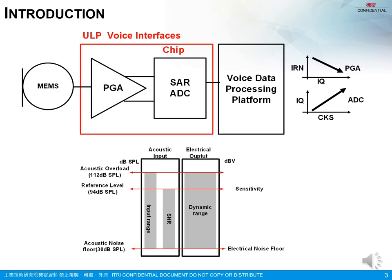We propose an ultra-low-power single-chip voice interface circuit designed with a sample microphone. A smarter design for the low-noise amplifier should provide flexible features, such as the quiescent current of PGA which can be adjusted over its input-referred noise. The sampling rate of ADC can be swapped to reduce power consumption. The proposed circuit is realized in a 180nm CMOS process and demonstrates successful voice data processing with the main sensor and an ultra-low-power platform.